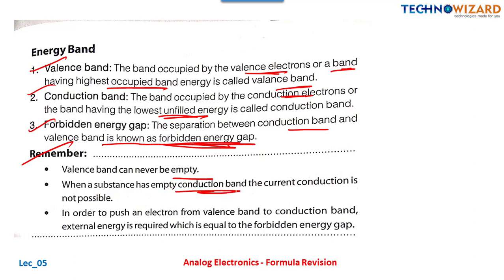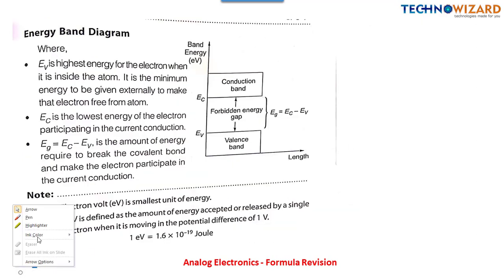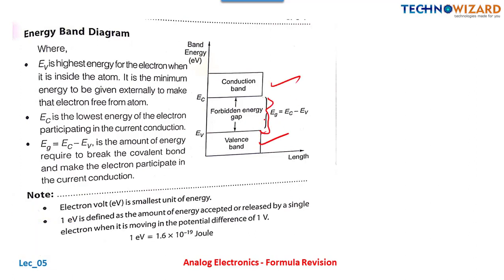When the conduction band is empty, current conduction is not possible. To push an electron from the valence band to the conduction band, external energy is required, which is equal to the forbidden energy gap. The energy gap is Eg = Ec − Ev, where Ec is the energy of the conduction band and Ev is the highest energy of the valence band.